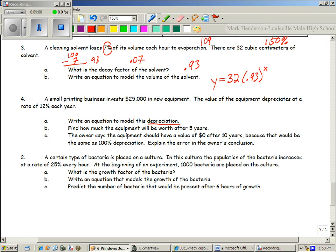So is depreciation growth or decay? Decay. It says it depreciates at a rate of 12% each year. So what is my decay factor here? Again, 12% is how far it is away from 100%? 0.88. So here we have Y equals 25,000 times 0.88 raised to the X. How can I figure out how much that will be worth after five years? Does the five go in as X or does the five go in as Y? It goes in as X.